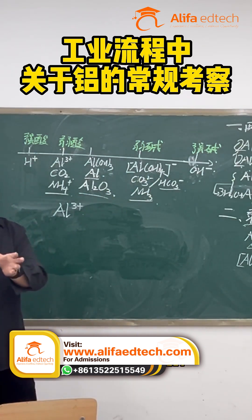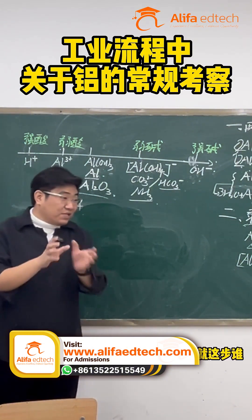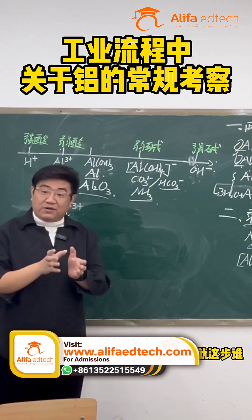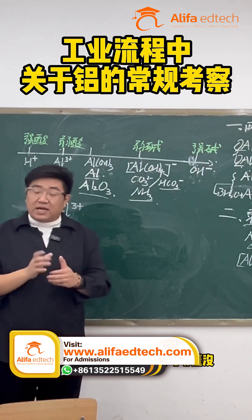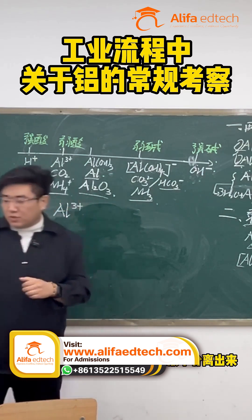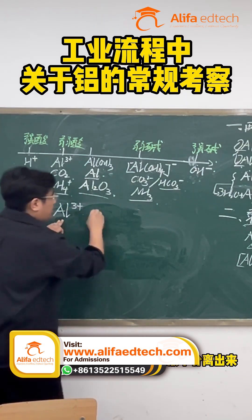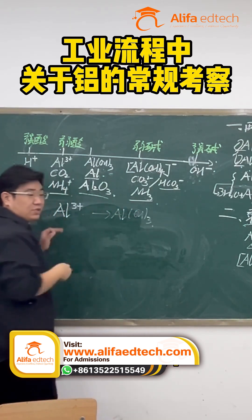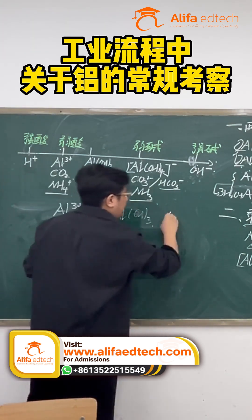So in this step, writing sodium hydroxide would be wrong. Some problems are so nasty they'll write out the whole process and ask you to find the error. In this step, what would be wrong? The sodium hydroxide — it should be replaced with ammonia. So if we're only considering separating aluminum ions from the solution, what do we choose for the industrial process? Sodium hydroxide or ammonia? We choose ammonia.